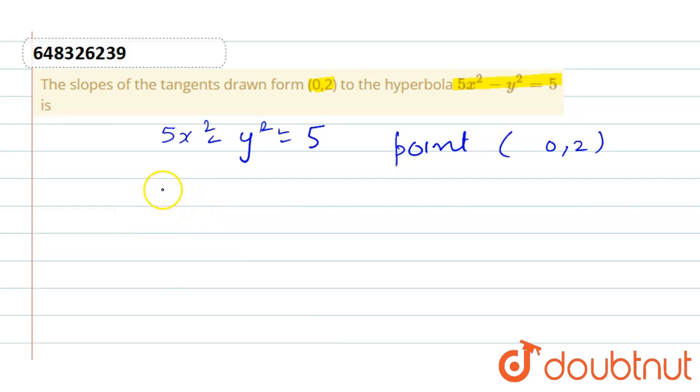For this hyperbola, we divide the equation by 5 to get the standard form: x²/1 - y²/5 = 1. From this equation, we can identify the values a = 1 and b = √5.